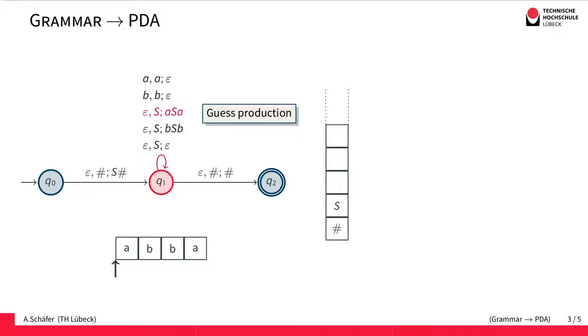So we take the corresponding transition and replace the S by ASA on the stack. And now the topmost symbol on the stack corresponds to the leftmost symbol of the derivation. This one here is obviously a terminal symbol, so it cannot be replaced any further. So we know that the leftmost character of our string will be an A.